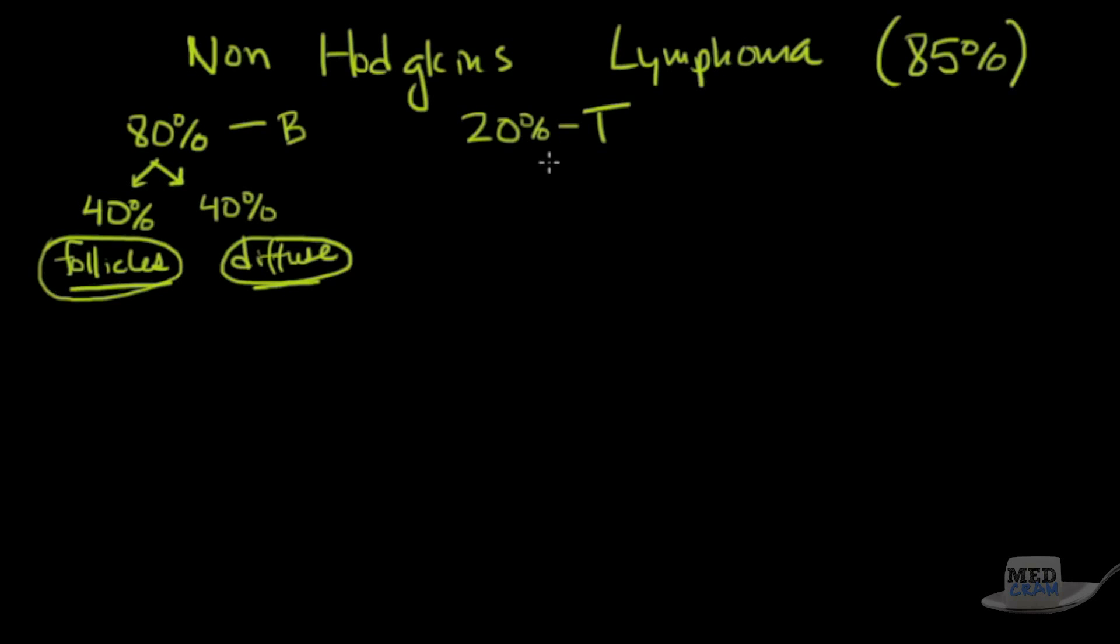Now in the 20 percent of the T cells, they are always diffuse. Now why is that? It's because B cells make up your lymph nodes and T cells don't. And where do you see follicles? You'll see them only in the lymph nodes. So if you're going to have a multiplication of B cells, half the time they look like they should as they do in lymph nodes, and the other half they're just diffuse.